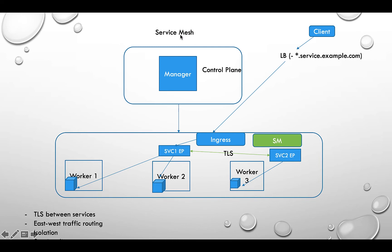Service mesh addresses that gap. Istio is a very well-known service mesh. Everything about the existing setup remains the same, but a service mesh layer is added. Istio comes with several components: istiod, an Istio gateway, and Envoy proxies which run as sidecars inside each pod. This sidecar pattern is how Istio does service discovery.